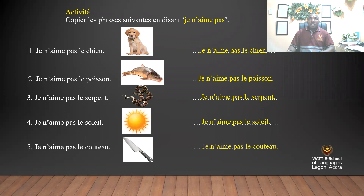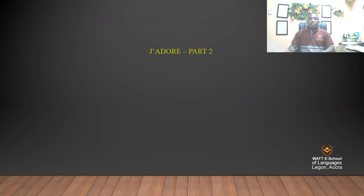Let's read: je n'aime pas le chien, je n'aime pas le poisson, je n'aime pas le serpent, je n'aime pas le soleil, je n'aime pas le couteau. All these sentences tell you 'I don't like.' In French, when you want to say you don't like anything, you say je n'aime pas and add the name of the item.